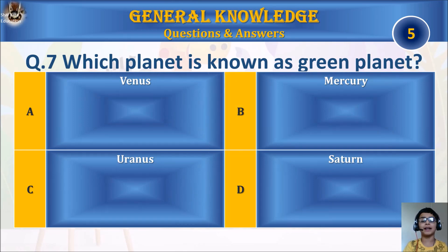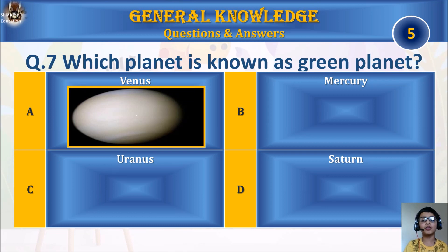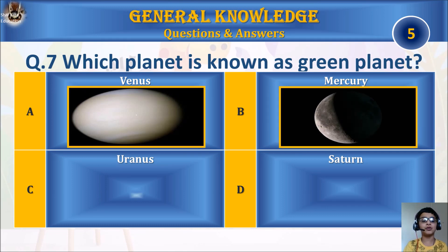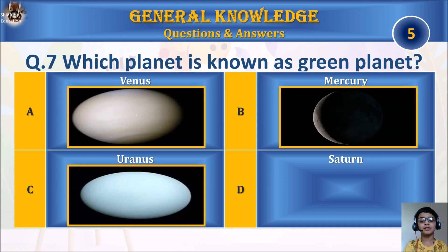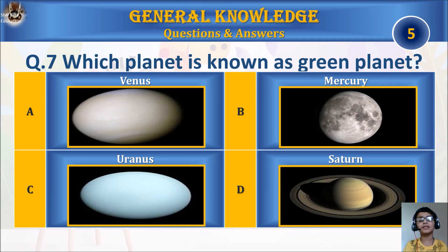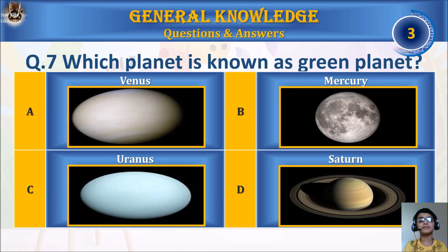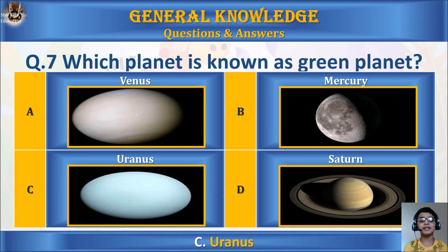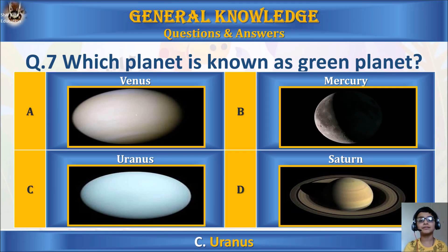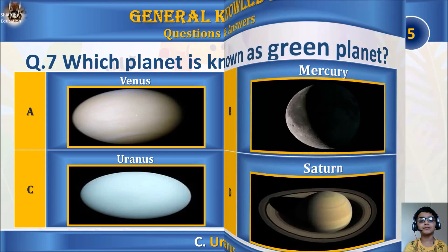Question 7: Which planet is known as green planet? A. Venus, B. Mercury, C. Uranus, or D. Saturn? Your time starts. The answer is C. Uranus.